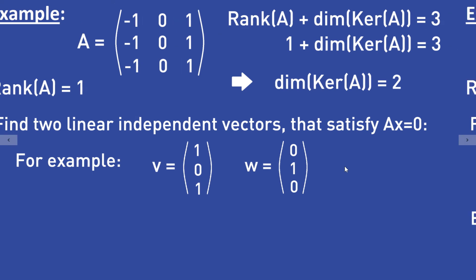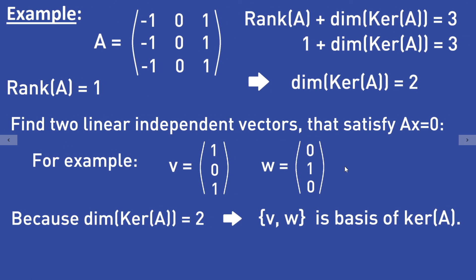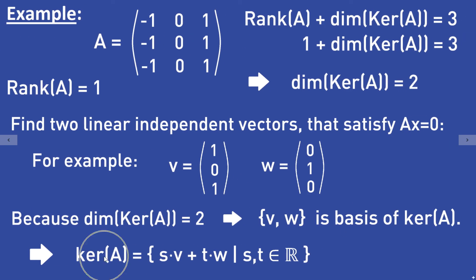That means the vectors v and w form a basis of the kernel of A, which means the kernel of A is equal to the set containing all vectors S times v plus T times w, where S and T are elements from the field R — that is, the real numbers.